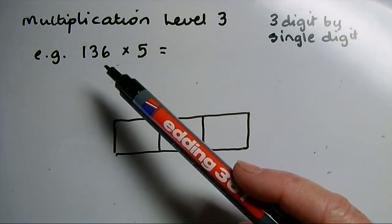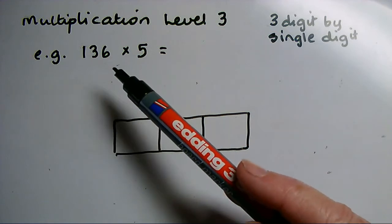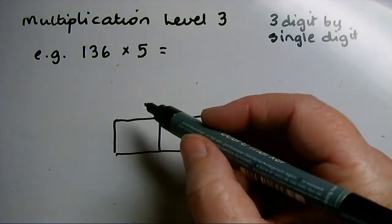136 is made up of three place values: 100, three tens and six units. So I split that number into those place values to put them on the top of the grid.